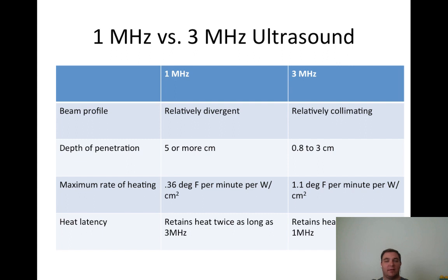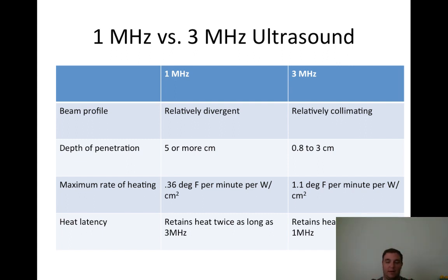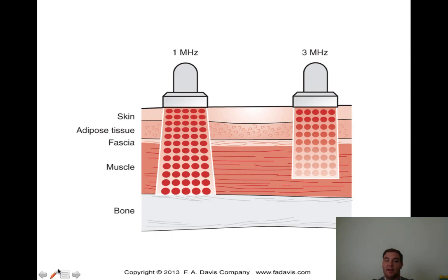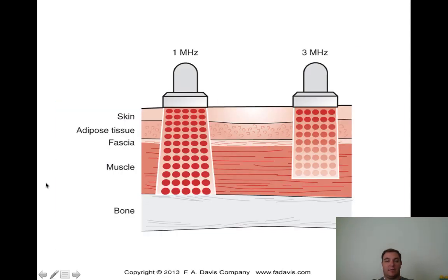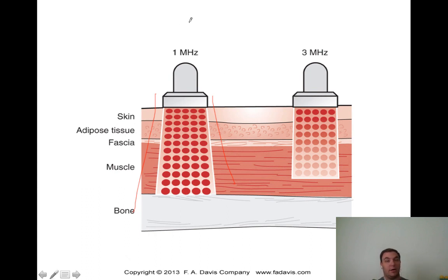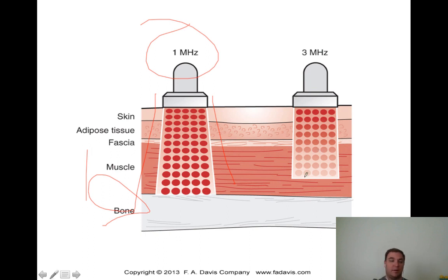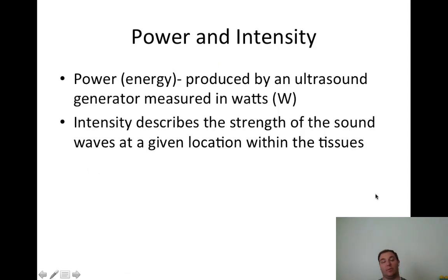To clarify: one megahertz is divergent, more cone-like; three megahertz is more collimated. One megahertz goes deeper - all the way to bone - versus three megahertz which may only go halfway through the muscle. Power is measured in watts; intensity describes the strength of sound waves at a given location within tissues. SAI describes the amount of energy passing through the sound head's ERA, expressed in watts per centimeter squared.